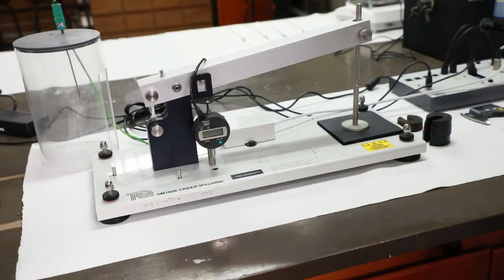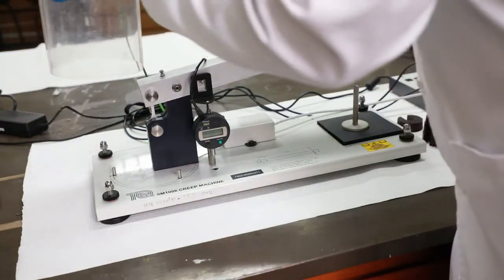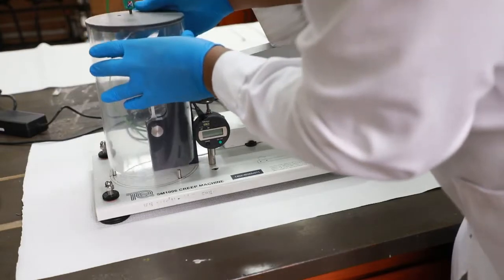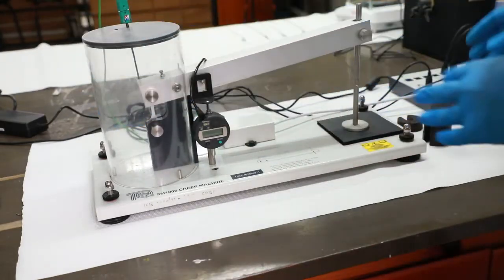Cover the sample with the insulating cover and add 0.6 kg weight to the loading tree while holding the lever arm.